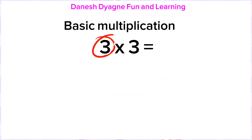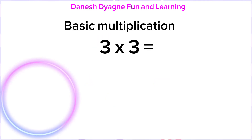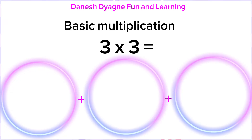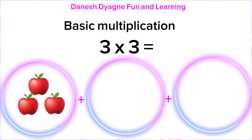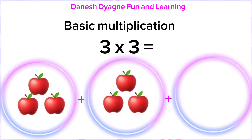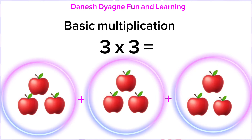First, we need to make three groups. One, two, three. Now we are going to put three objects in each group. How many apples altogether? Let's count! One, two, three, four, five, six, seven, eight, nine. So the answer is nine.